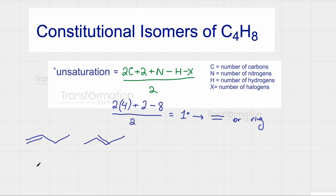Next I can shorten my carbon chain by one, having three carbons and adding the extra carbon to the middle carbon — that gives me 2-methylpropane. Now I can add my double bond. I could add it to either of these carbons and it would be the same, so that's another constitutional isomer.